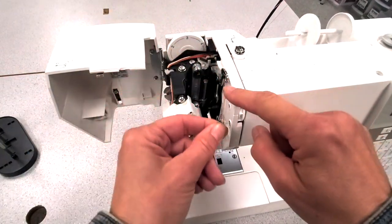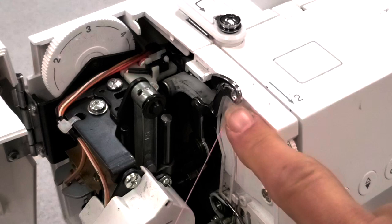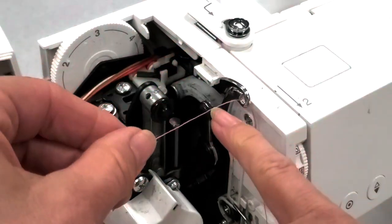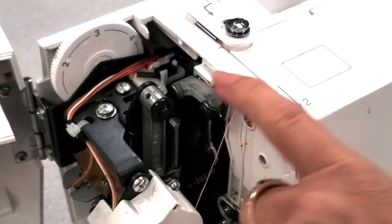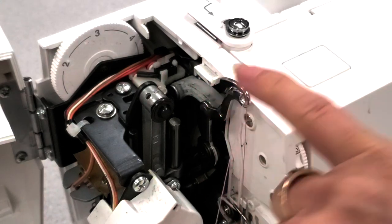You're going to take your thread up on the right, down on the left. You need to make sure that the thread is right in the end of this. If it doesn't come right into the end there, it's going to come out of that hook and you're going to have terrible stitching.